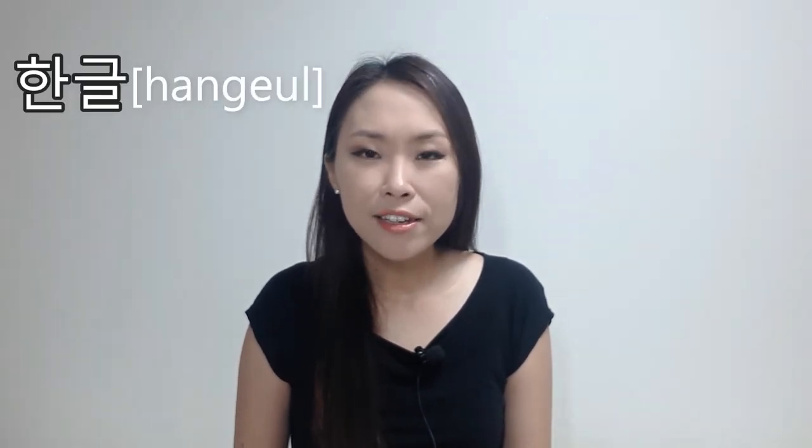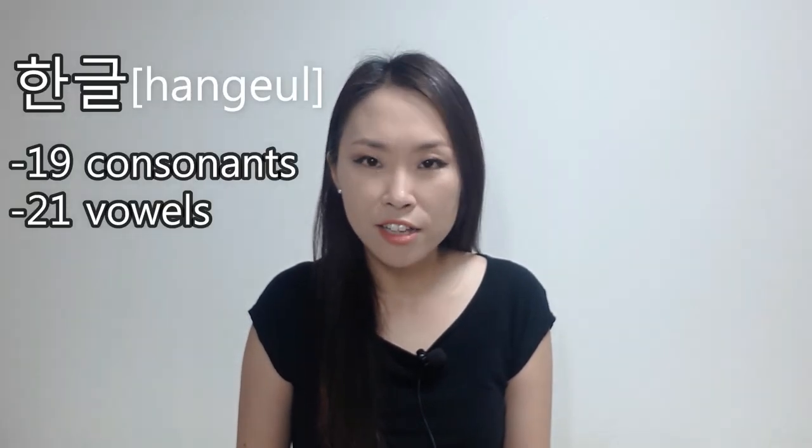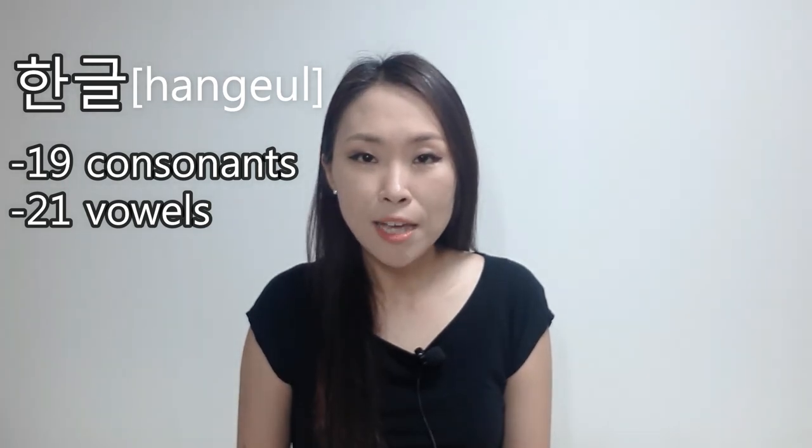Korean alphabet has a name, 한글. 한글 consists of 19 consonants and 21 vowels. You already learned 7 basic consonants in the previous lesson.